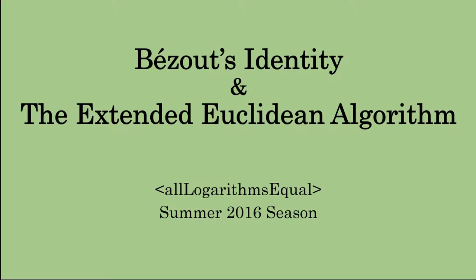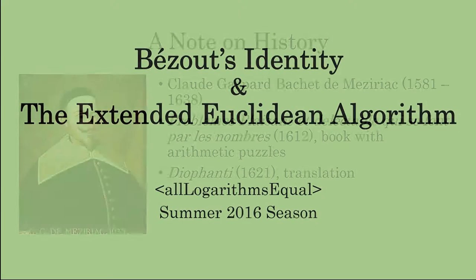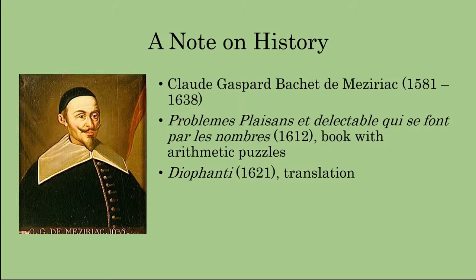First, some notes on the history. We have a French mathematician in the 16th and 17th centuries by the name of Claude Gaspard Bachet de Méziriac. He, according to some sources, was the original discoverer of what is now called Bézout's identity.